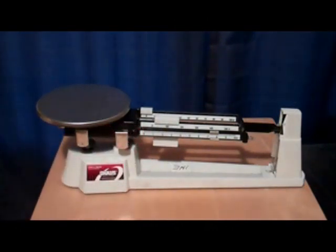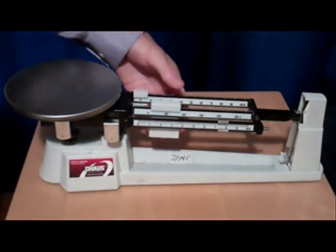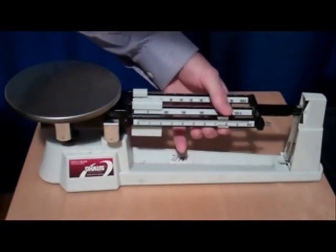The second step in preparing the triple beam balance for use is to move all of the riders to zero. Move each of the riders back to zero.